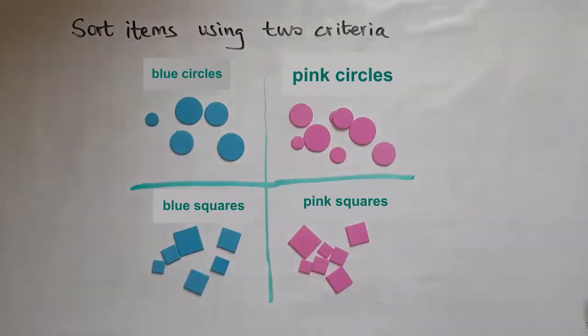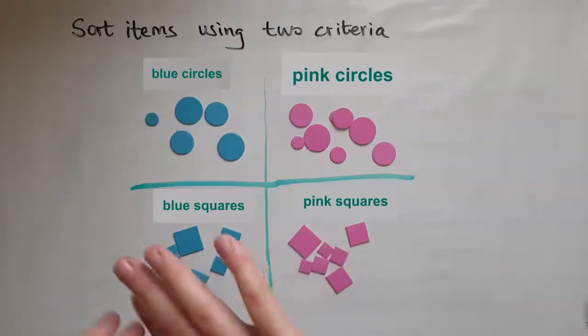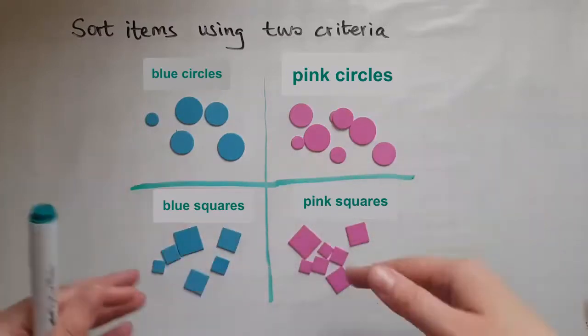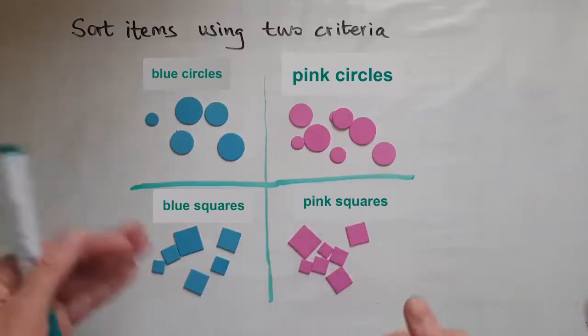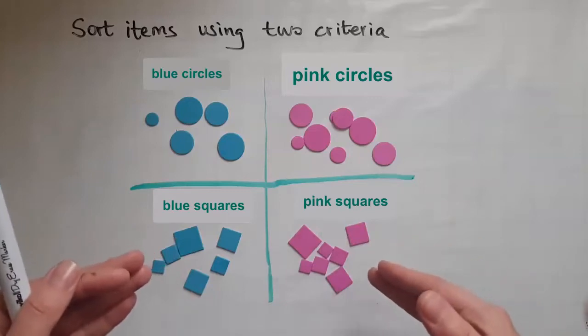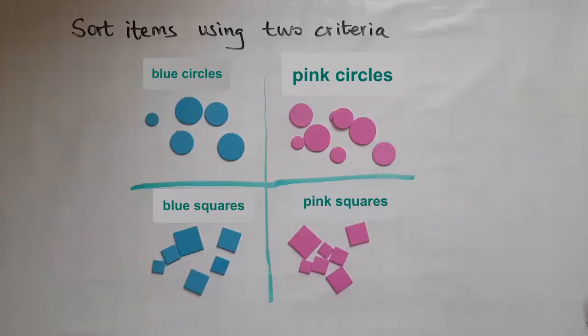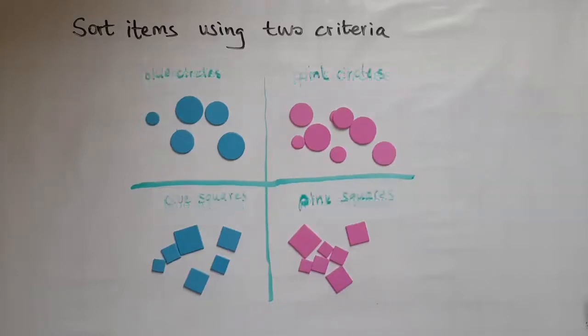So to sort items using two criteria, you've got to look at what is different about them. So make that first sort, just like I did, I split them by color first. And then notice the difference within the colors. So I could see then that there were circles as well as squares. And that's how I sorted them the second time, using the second criteria.